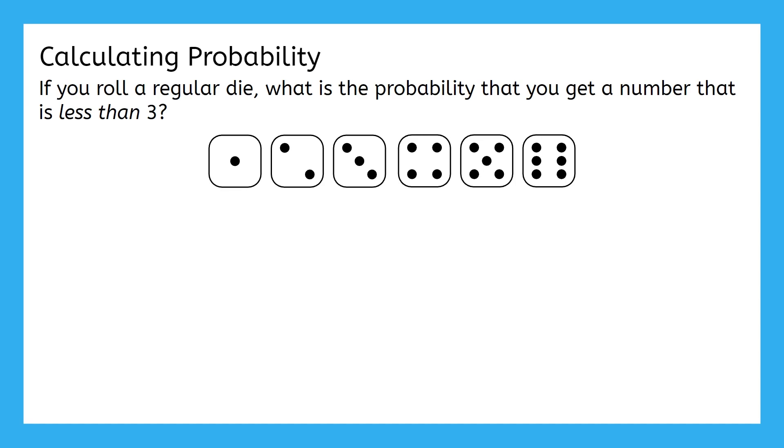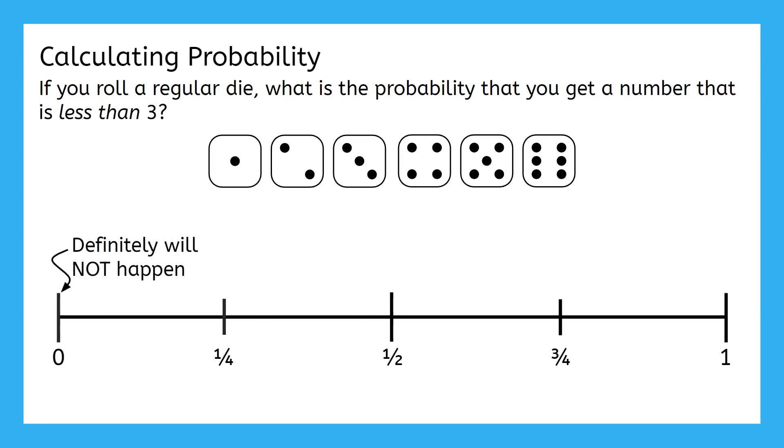We learned in our unit introduction that probability is always between 0 and 1, where 0 means it definitely will not happen, and 1 means that it definitely will happen. With this in mind, what do you think the probability is of rolling a number that's less than 3?